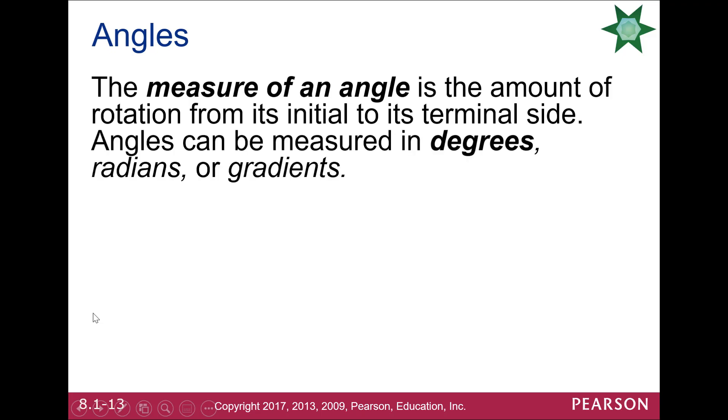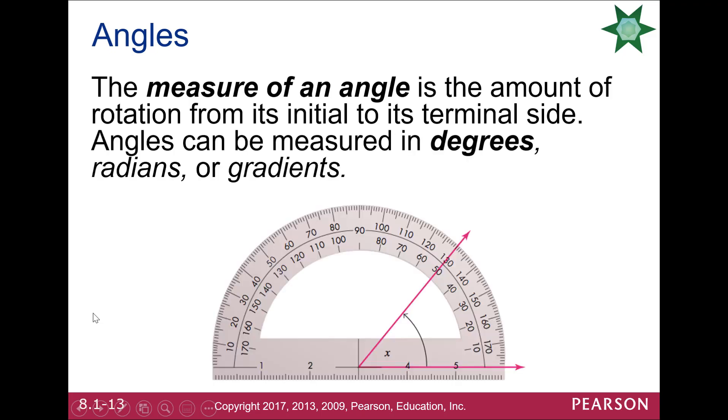If you measure from the initial terminal side, you're getting what we call the measure of the angle. And you've probably seen one of these before. It's called a protractor, and you measure up toward the terminal side. So you start here. You line up very carefully, where there's usually a little hole in your protractor. And you measure up, and this angle is a 50-degree angle. We're typically going to use degrees, but you may remember years ago talking about radians or even gradients.